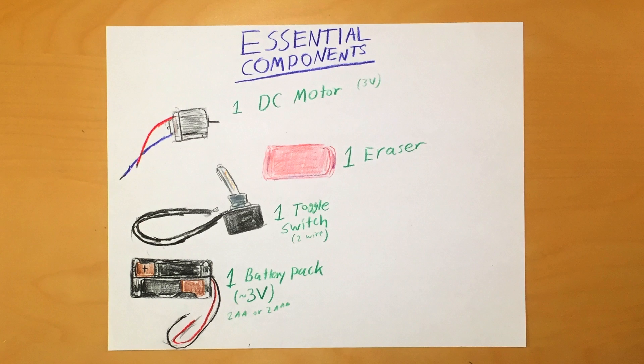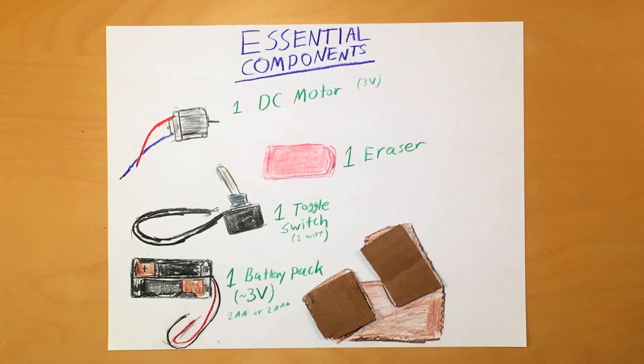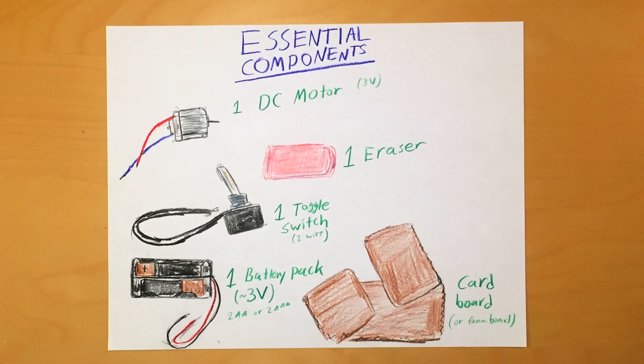Next, get a 2 wire toggle switch. Finally, get some scrap pieces of cardboard or foam board. Most of these items can be found online or in most hardware stores. I'll include links in the description for all items.